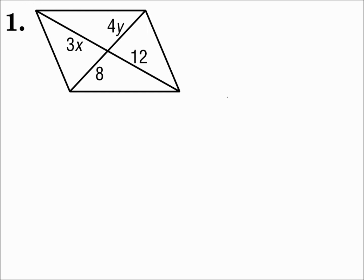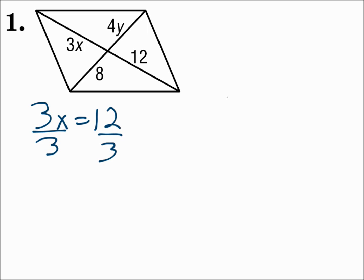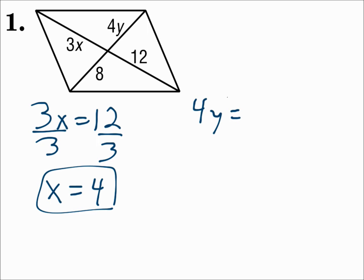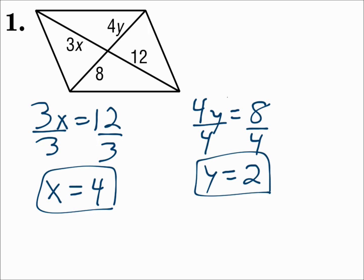Number one. In this parallelogram, the diagonals are drawn. One of the properties is that the diagonals bisect each other, so each diagonal is cut in half and the two halves are equal. On one diagonal, 3x has to equal 12 because those halves are equal. Divide by 3, and x equals 4. For the other diagonal, since it's bisected, the two halves are equal as well, so 4y equals 8. Divide both sides by 4, and y is 2.